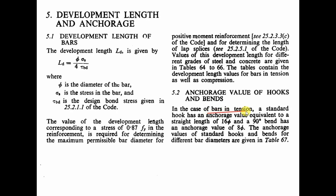When it comes to anchorage length, if the bar is in tension, a standard hook has an anchorage value equivalent to a straight length of 16 diameters, and a 90-degree bend has an anchorage value of 8 diameters. The anchorage values of standard hooks and bends for different bar diameters are given in Table 67 of SP16.